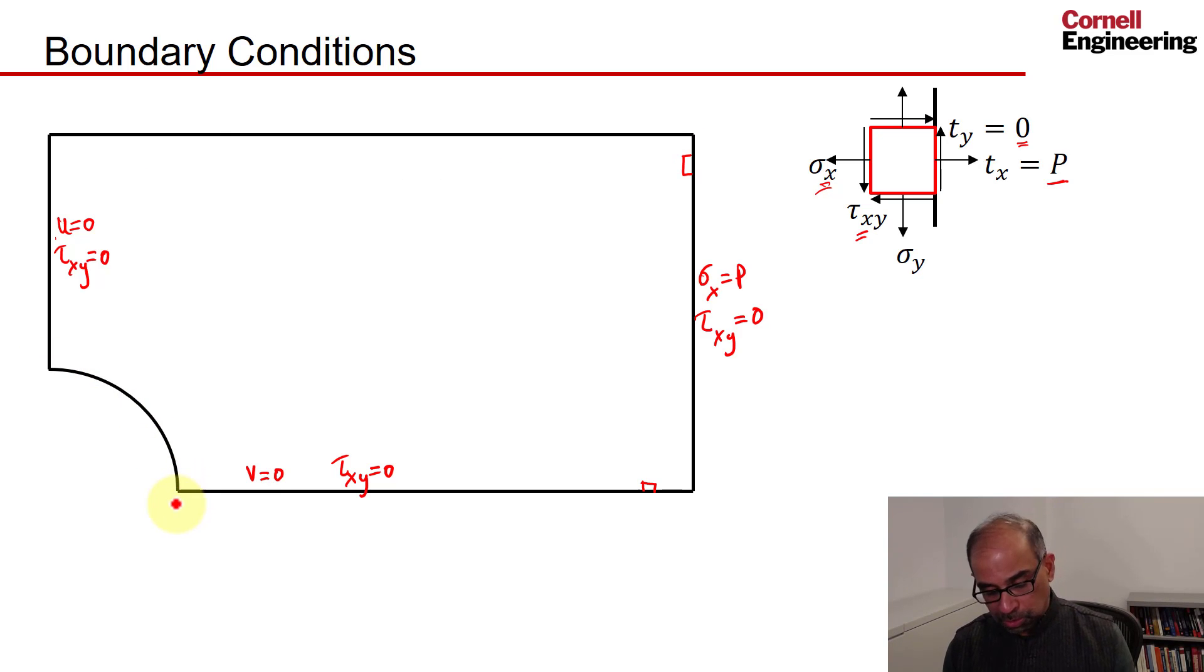Now, at this boundary, things are a little bit more complicated. You could go to the Cauchy relations, or you could switch to a polar coordinate. So that's r, and that's theta. And then again, if I consider a vanishingly small chunk of material like that, I can write by inspection that sigma r has to be zero, and tau r theta has to be zero.